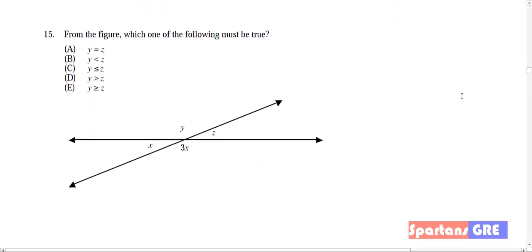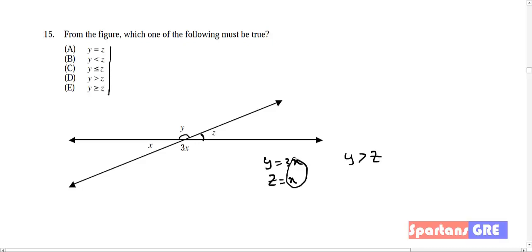From the figure, which of the following must be true? They compare between y and z. Y = 3x and z = x. It is very clear that y is greater than z, because x cannot be negative — angles are always positive. So y will be greater than z, and option D is correct.